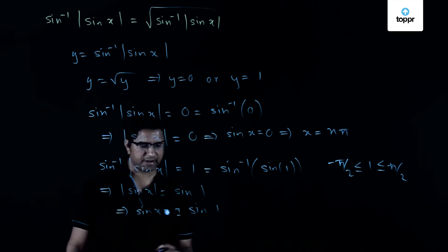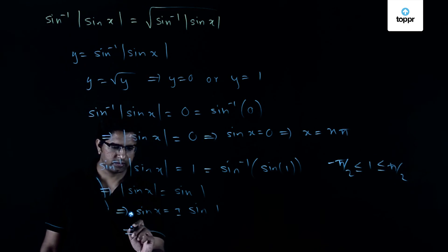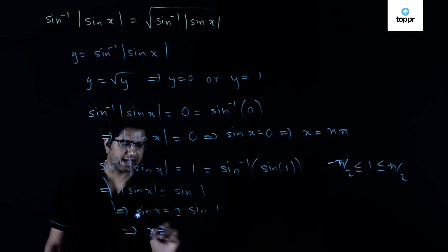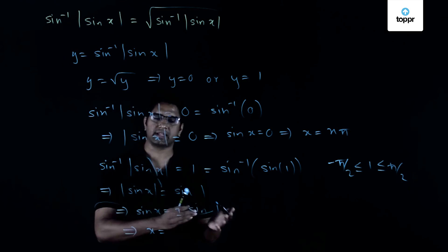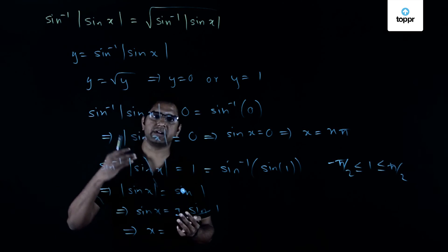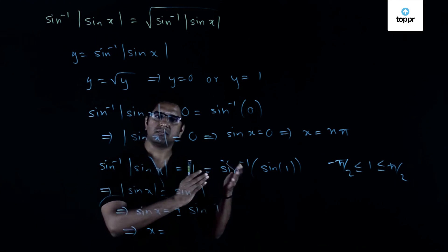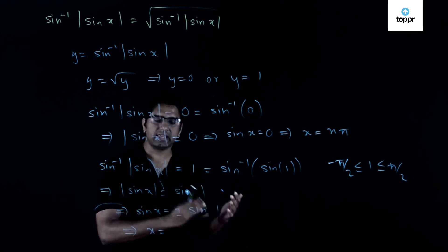So what does this imply? This implies that x is actually equal to, so once we have sine theta equals sine alpha, we know that theta can be written as alpha plus minus 1 raise to the power n, n pi and so on.